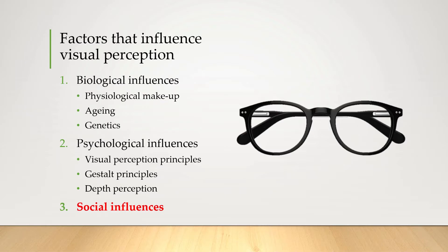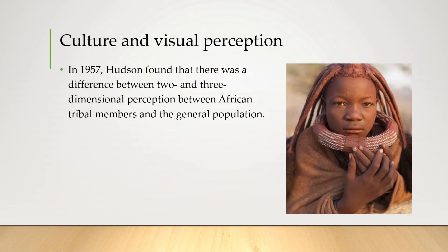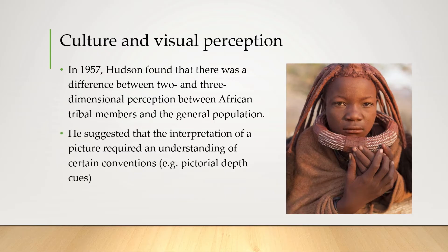Let's look at an example of this. In 1957, Hudson found that between African tribal members and the general population, there seemed to be a real difference between the way that they perceived two and three-dimensional images. He suggested that this was because interpreting any picture requires an acceptance or an understanding of certain conventions — for example, pictorial cues like the ones we saw in the previous video.